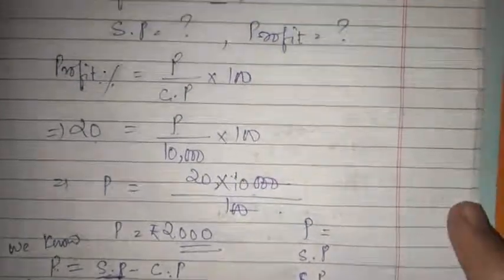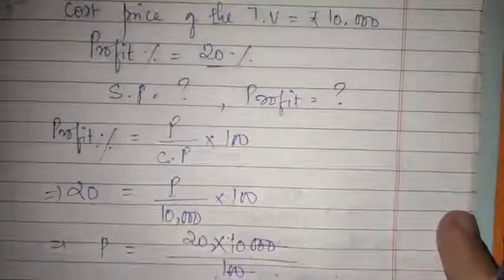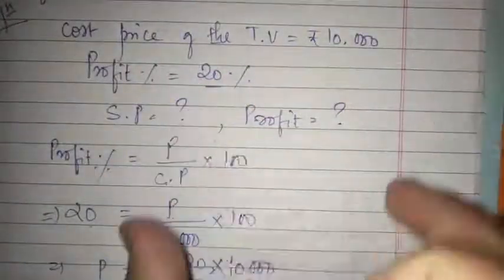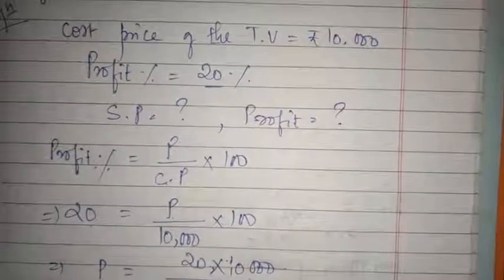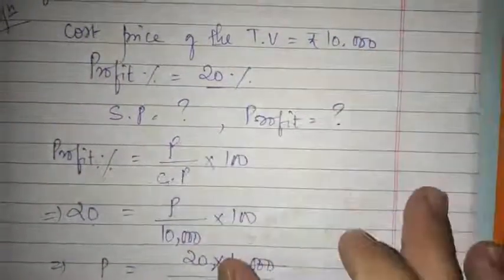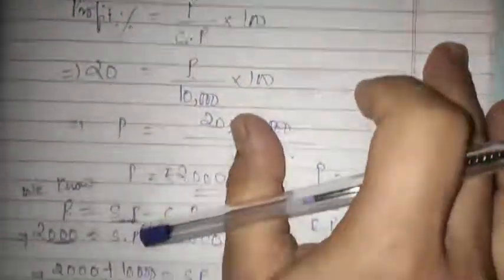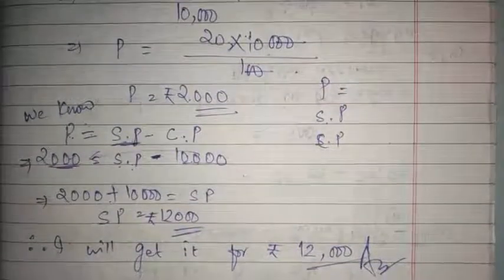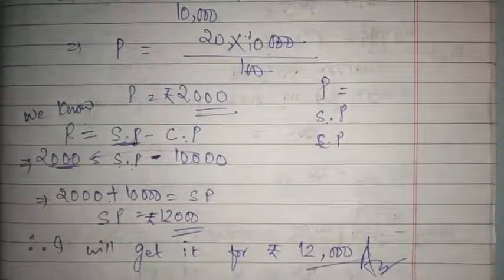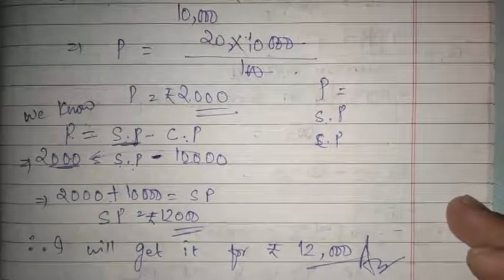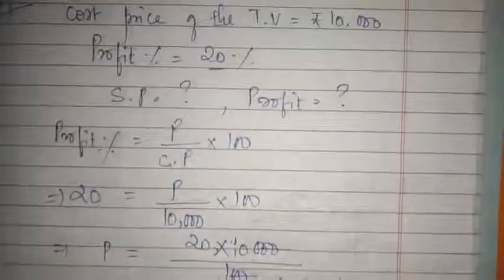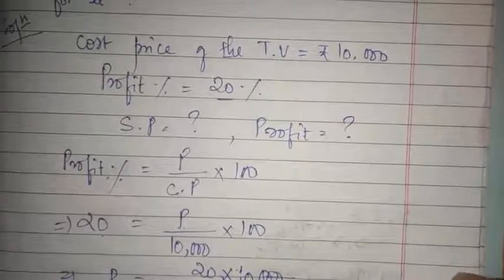You have to use the previous concept — first write the given values in a clear form, then present the formula, calculate the required value step by step. That is all for today's session. In our next class we will proceed with question number 6.